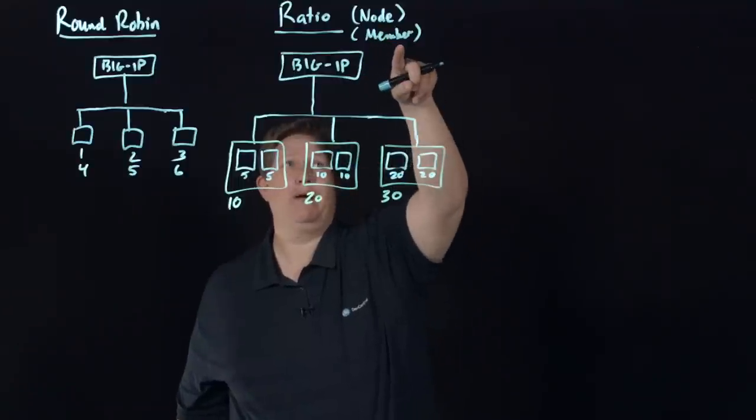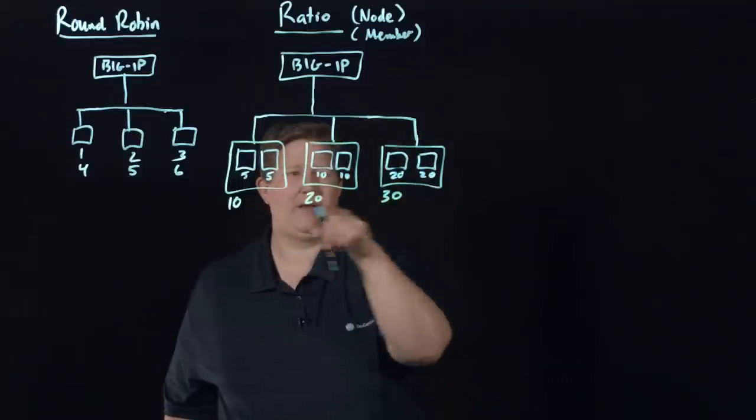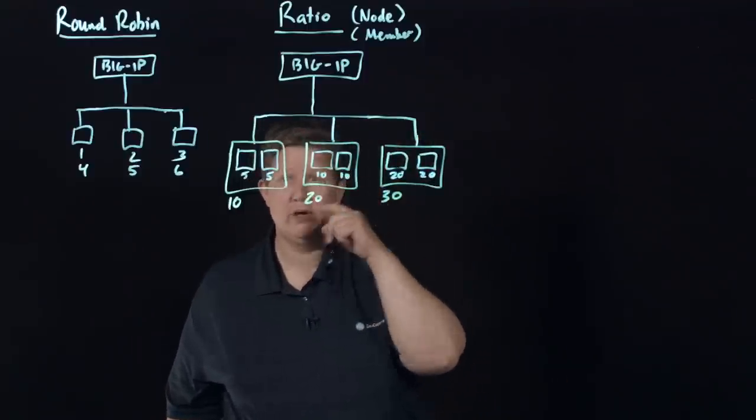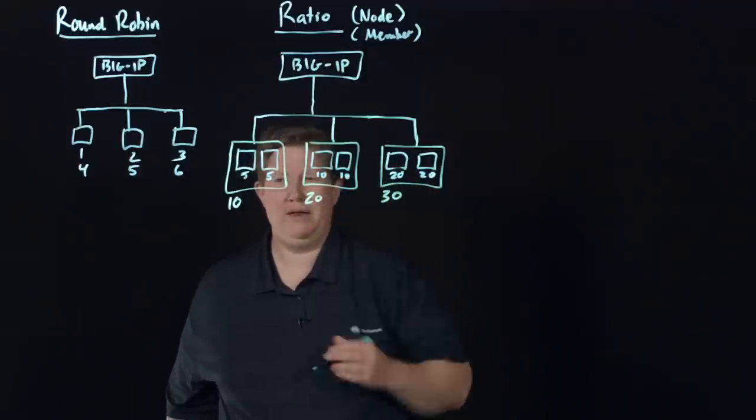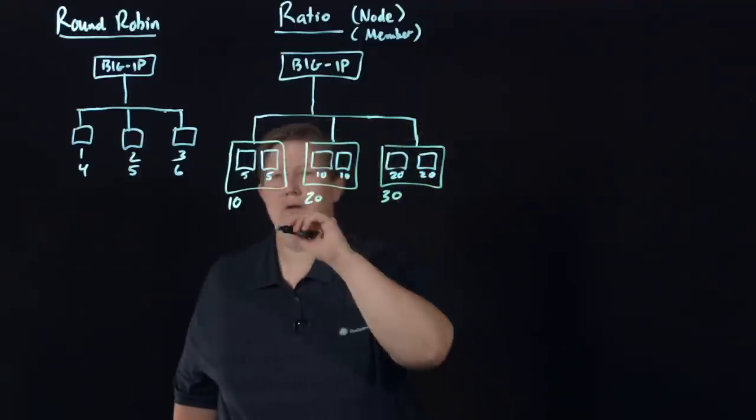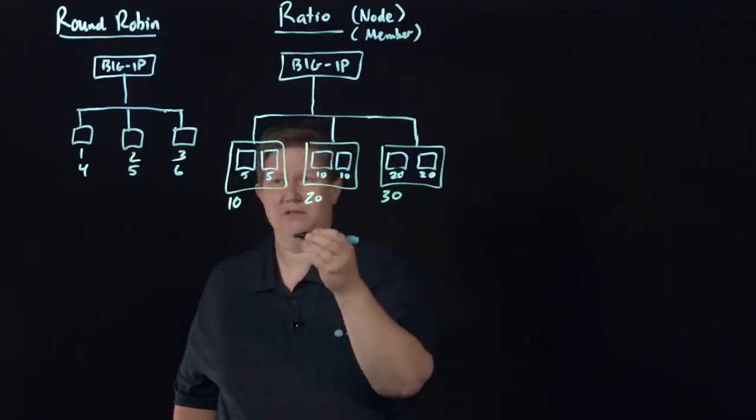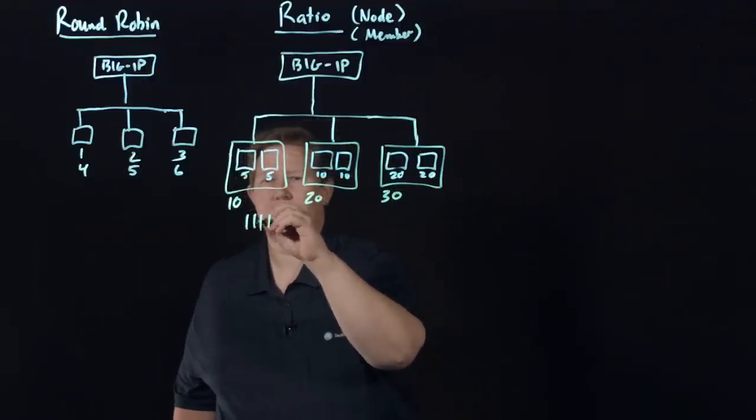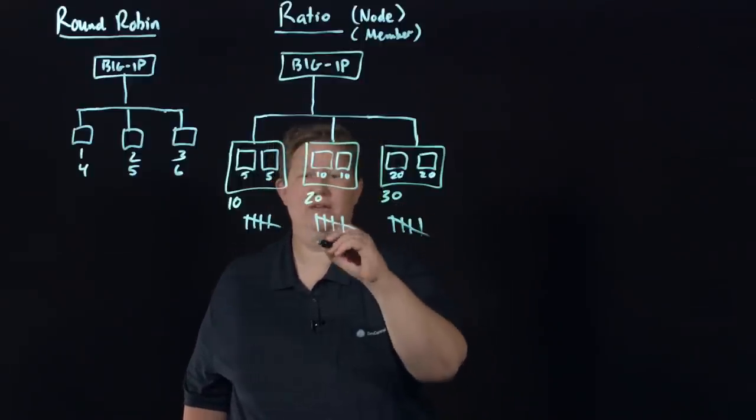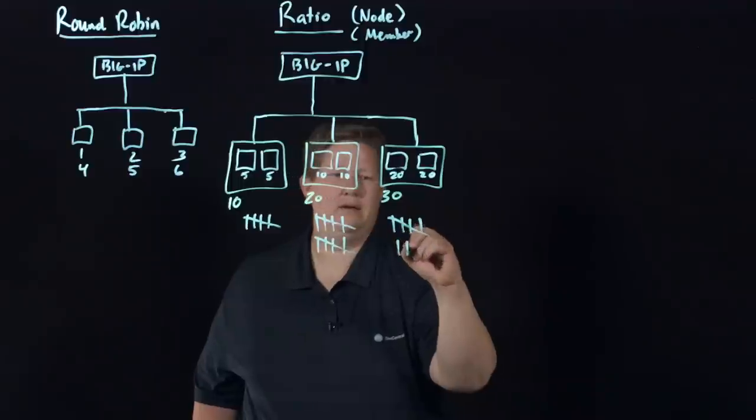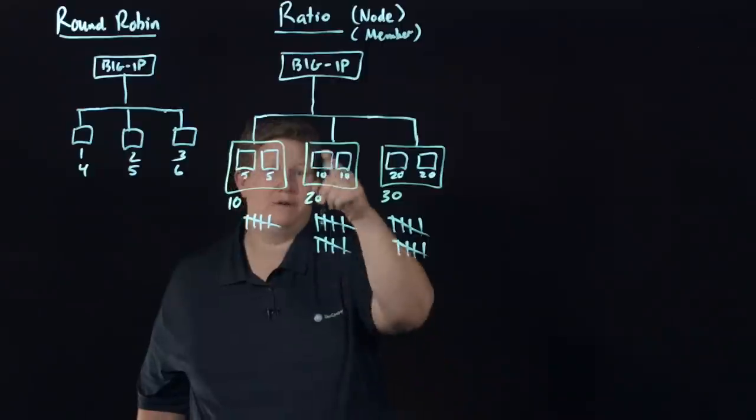That's at a node level. If the pool algorithm that you've set is node, if the pool algorithm you set is member, then it's not going to care about the value set on your node. It's going to look at this individual pool member within that node.